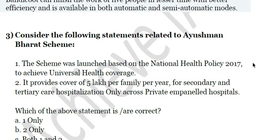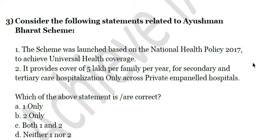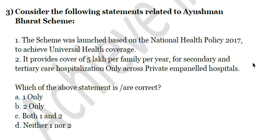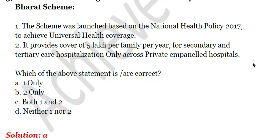Next, consider the following statements related to the Ayushman Bharat scheme. First: the scheme was launched based on the National Health Policy 2017 to achieve universal health coverage. Second: it provides cover of Rs. 5 lakh per family per year for secondary and tertiary care hospitalization only across private empanelled hospitals. Only the first statement is correct, because the Rs. 5 lakh cover is available across both public as well as private empanelled hospitals.